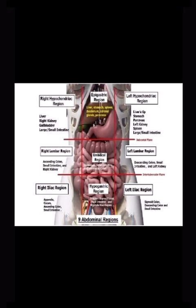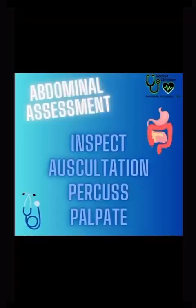The right and left lumbar regions and the umbilical region are in the middle abdomen. The right and left iliac regions are in the lower abdomen, along with the hypogastric region.